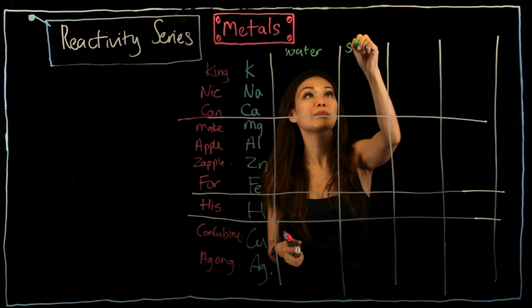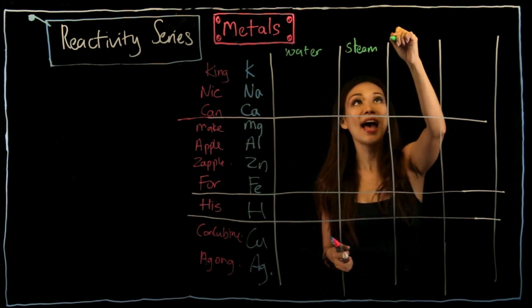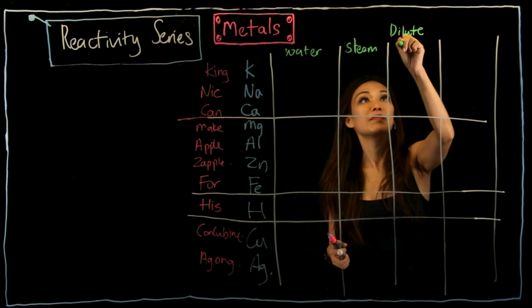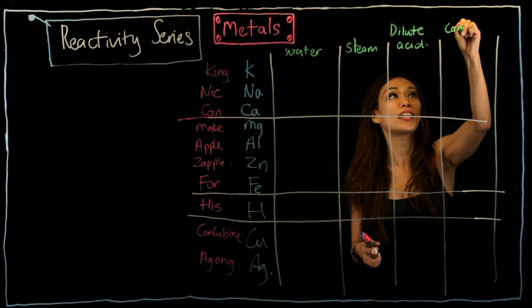followed by steam. Then we have the dilute acid. Lastly, concentrated acid.